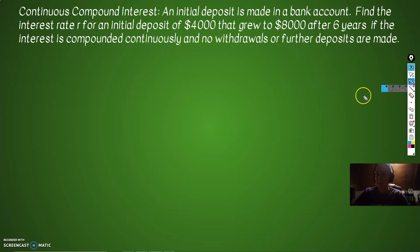Okay, let's see another compound interest problem. So again, we are going to use the A equals P to the E to the R to the T. So an initial deposit is made in a bank account. Find the interest rate R, so that's what we're after. We're after the R for an initial deposit of $4,000. So initial deposit is $4,000. We're after R. It grew to $8,000. So we know the final amount is $8,000 after 6 years, which means T is 6. Got all of our pieces. Now let's figure out the R part.